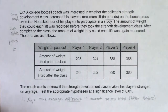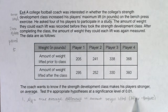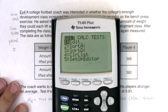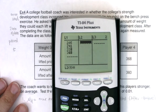You could go before minus after, but I like after minus before — it's just a personal preference. If I'm going after minus before and I'm this football coach, I'm hoping this number is positive, because if the difference is positive it means the after number is larger than the before — meaning the strength development class is working. Let's go to our lists and put our data in. I'll put the before data into L1 and the after data into L2.